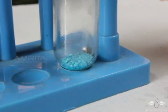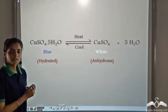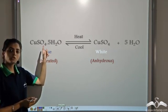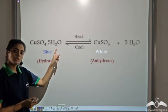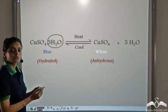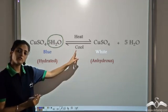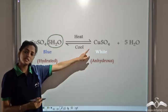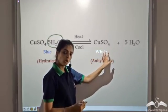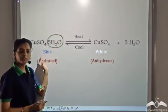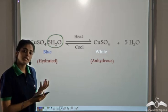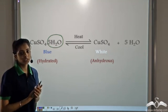A chemical reaction is taking place here. We had hydrated copper sulphate, which is CuSO₄·5H₂O. On heating, it loses the water of crystallization, forming anhydrous copper sulphate, which is white in colour, and water is released. Similarly, if we add water to the white anhydrous copper sulphate, we get back the blue hydrated copper sulphate. We can easily observe this change in colour.